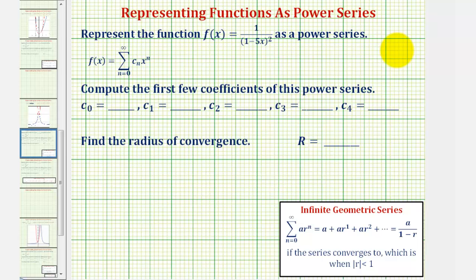We want to represent the given function f(x) = 1/(1 - 5x)² as a power series. Compute the first few coefficients of the power series and also find the radius of convergence.